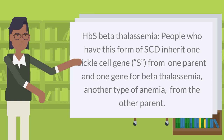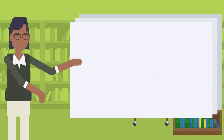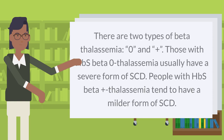HbS beta thalassemia: People who have this form of SCD inherit one sickle cell gene (S) from one parent and one gene for beta thalassemia, another type of anemia, from the other parent. There are two types of beta thalassemia: 0 and plus. Those with HbS beta-0 thalassemia usually have a severe form of SCD, while people with HbS beta-plus thalassemia tend to have a milder form.